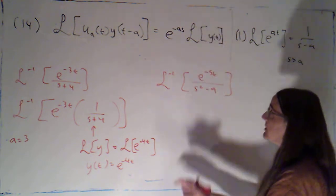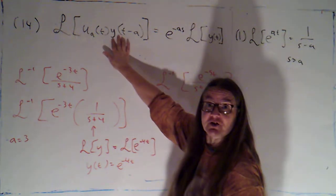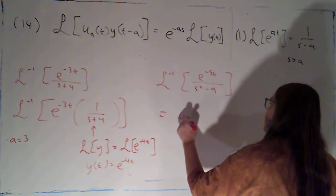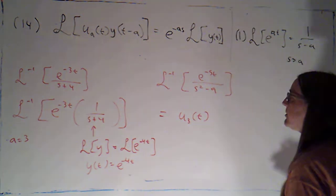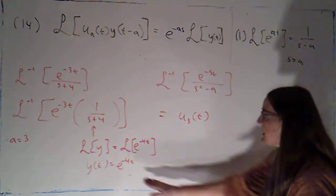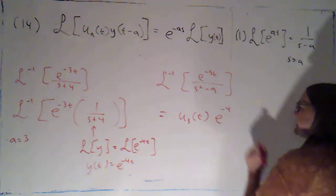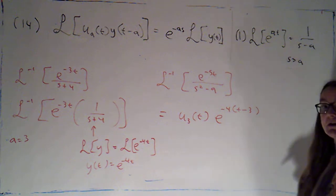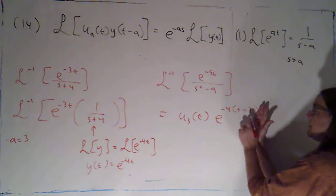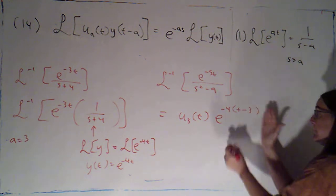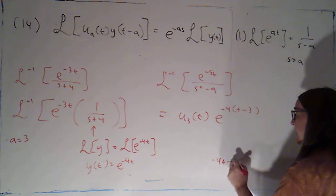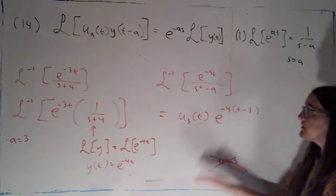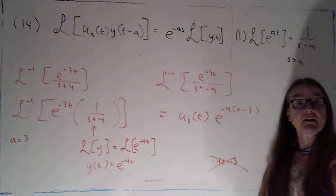So I've figured out what my a is and I've figured out what this function y of t is, so now I can put the pieces together. We're going to get mu sub 3 of t — that's turning this on at time 3 — times this function, except instead of evaluated at t, I want to evaluate it at t minus 3. Do be careful: it's not negative 4t minus 3. It's negative 4 times the quantity t minus 3. So that would be our inverse Laplace transform for this first one.